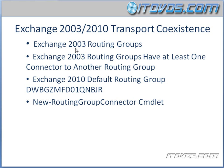Exchange 2003 uses routing groups and link state updates to help determine the best route to send email. It also uses routing group connectors to send email back and forth between routing groups. Exchange 2010 does not use routing groups at all. It uses least cost routing, and it uses Active Directory sites and services to determine the cost of the routes between the sites.